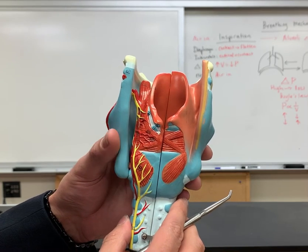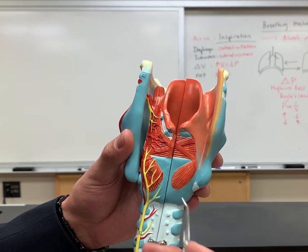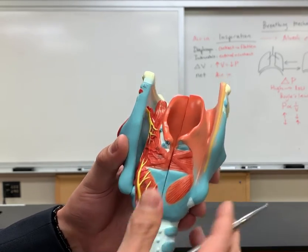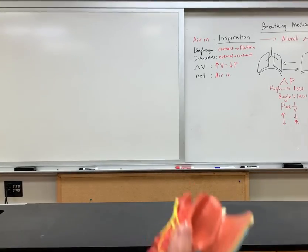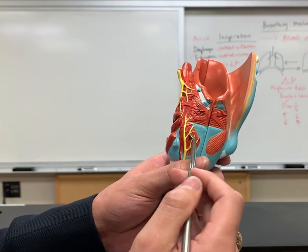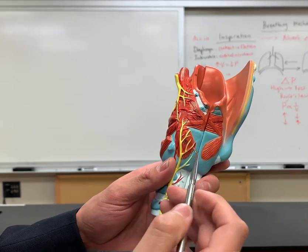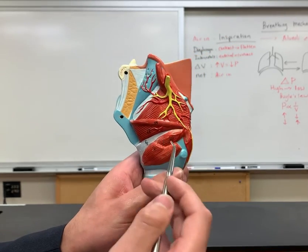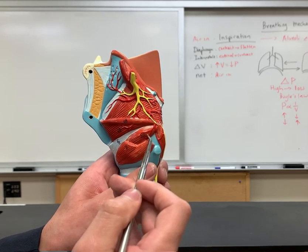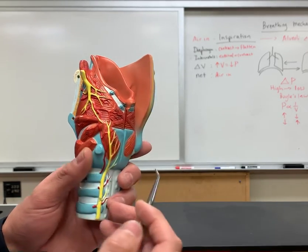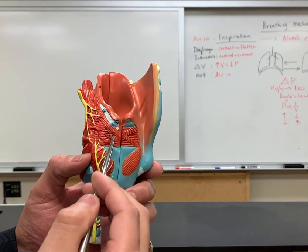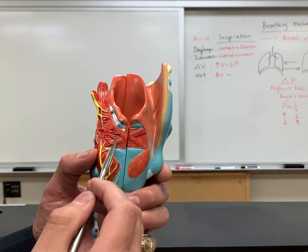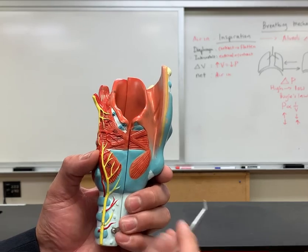Now let's get started on some of the different muscles because this is the bulk of this larynx model. This is the cricoid, and if I take this part off — this is the cricoid and this muscle is going to the arytenoid which is number nine. So this is the posterior cricoarytenoid muscle, that's number 16. And then number 15 that's lateral here, this is the lateral cricoarytenoid based off the direction that it's going. You also have number 14 which is the transverse arytenoid, and then number 13 this is the oblique arytenoid.